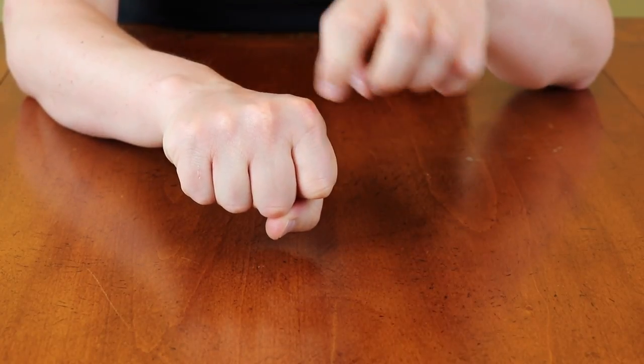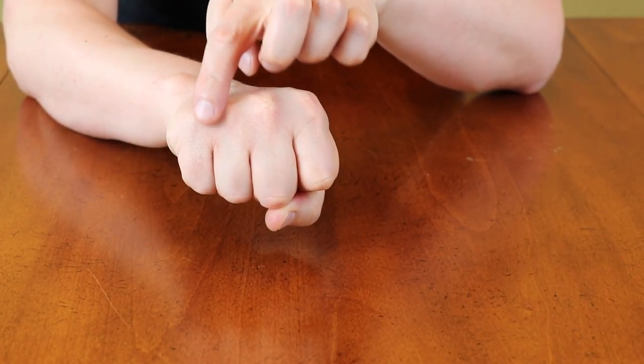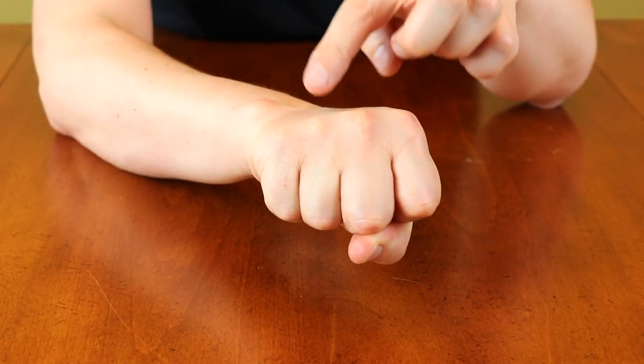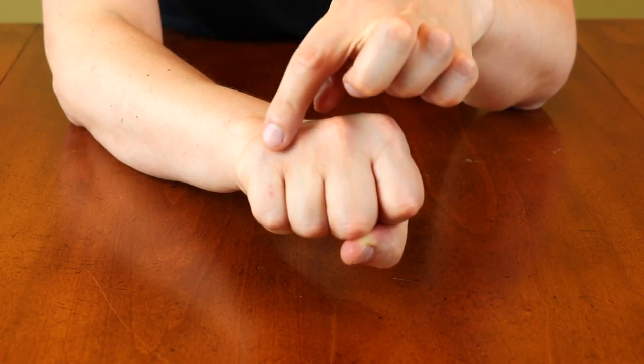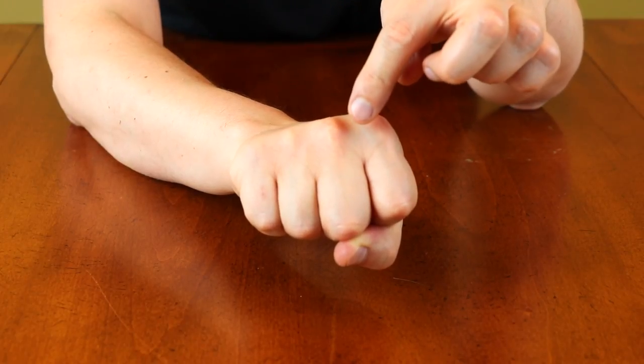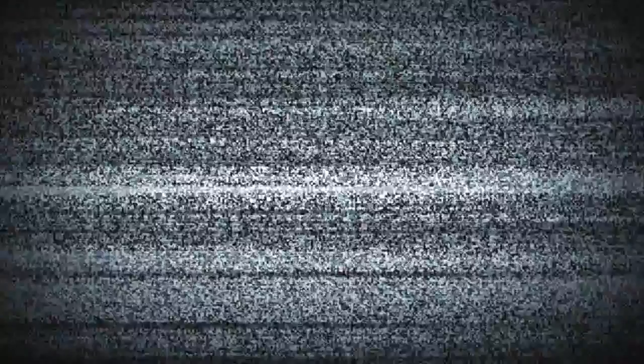So I'm gonna start counting using my knuckles and also the spaces in between knuckles, the groove. So any month that falls on a knuckle will have 31 days. And those months that fall in between knuckles, they will have 30 days, except February which has 28 days. Okay,